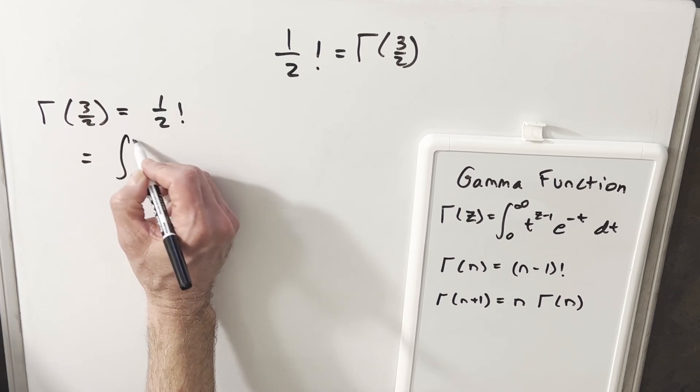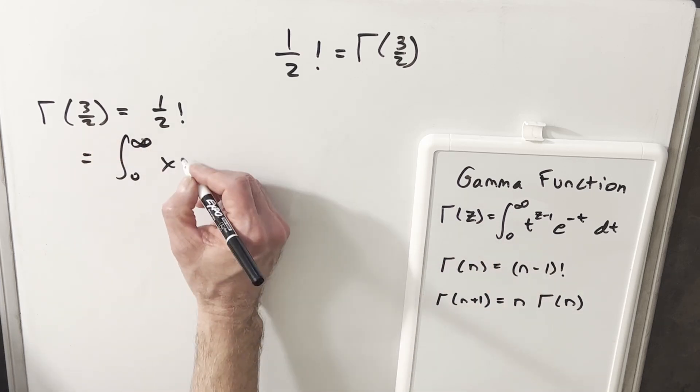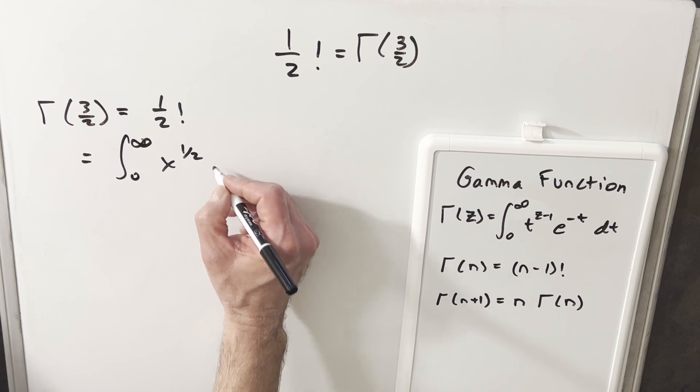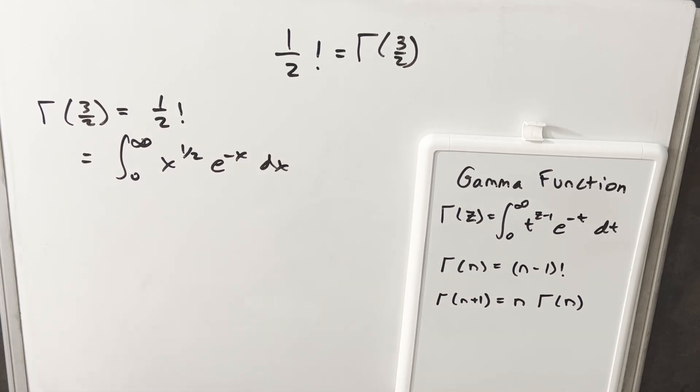We're looking at it's going to be zero to infinity and put this in terms of x. So three halves minus one, and so we're going to have x to the one half e to the minus x dx. And so what I'm going to do is we're just going to try to work out this integral using integration technique.